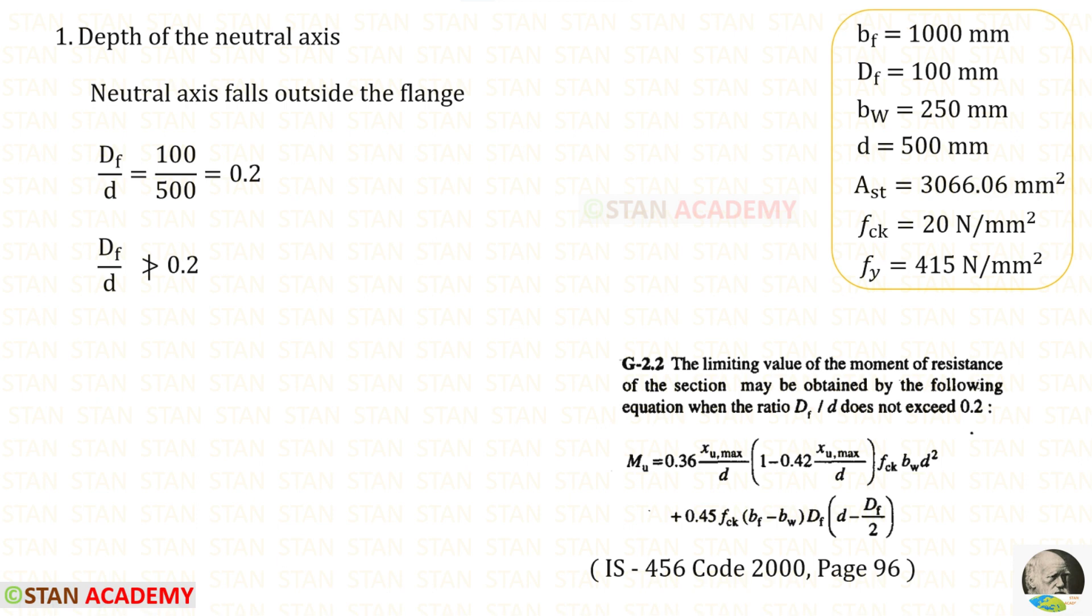Now, we need to check whether DF upon D does not exceed 0.2. For DF upon D, we will get 0.2. So, DF upon D does not exceed 0.2.